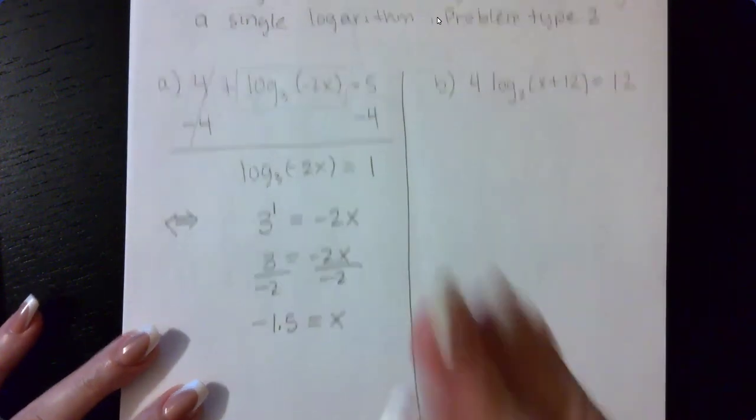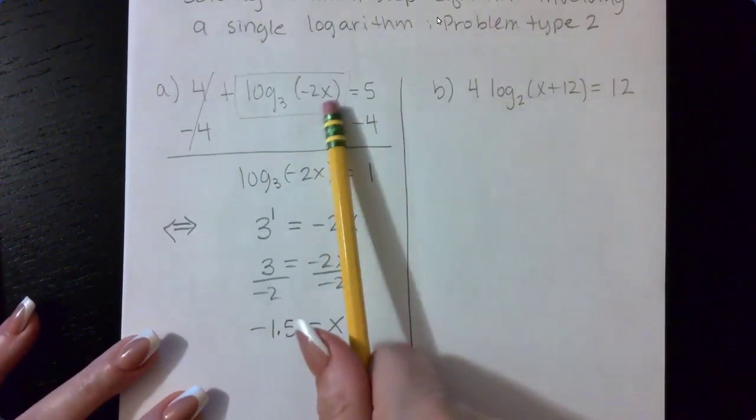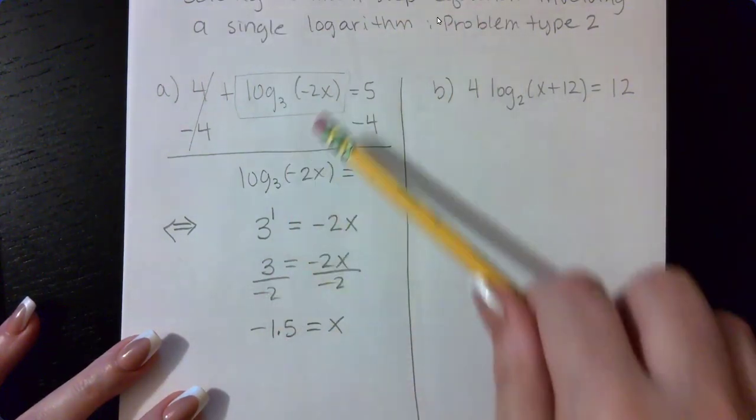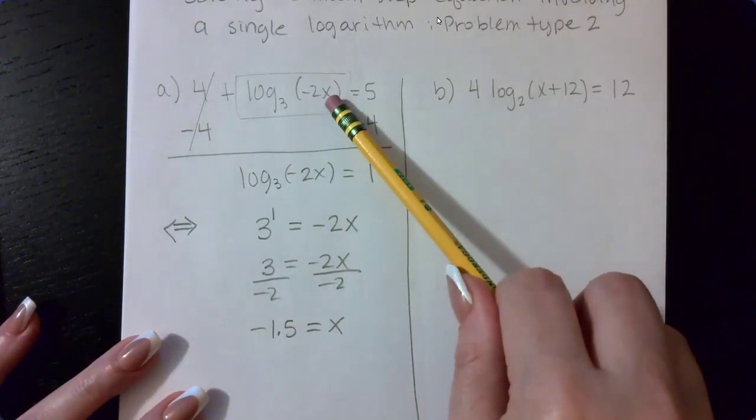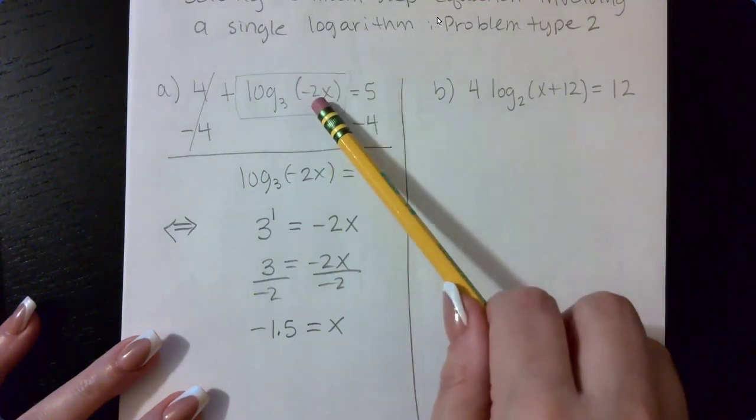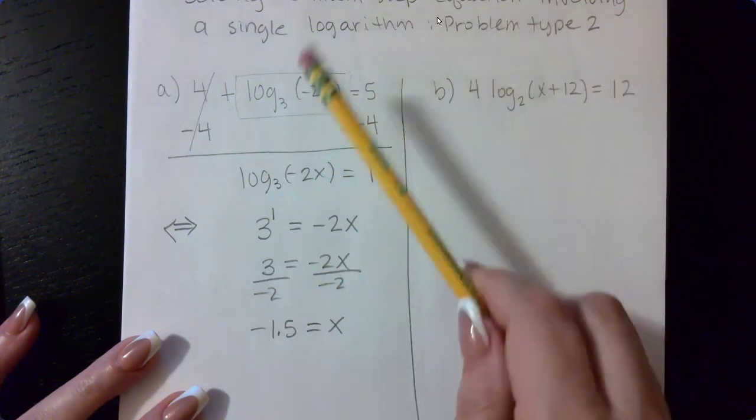Now, remember where x is. x is inside of an argument. Arguments must be positive. So if I plug this negative 1.5 in there, I need to be sure that that's going to be a positive result. And since a negative times a negative is a positive result,